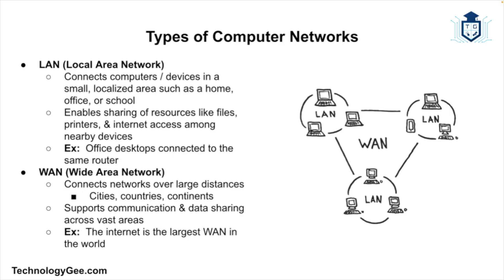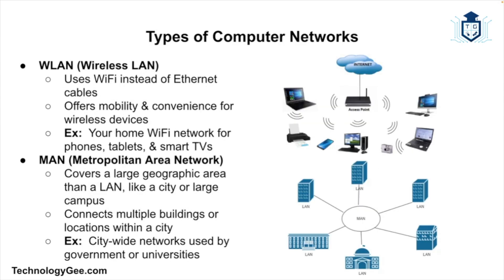The internet itself is considered to be the biggest WAN in existence — it connects users across the country or across the globe. Then we have a Wireless LAN, which is a LAN that uses Wi-Fi instead of cables. Most home networks use this so you can walk around with your laptop or phone and access the internet. Next is a MAN, or Metropolitan Area Network, which covers a city or large campus.